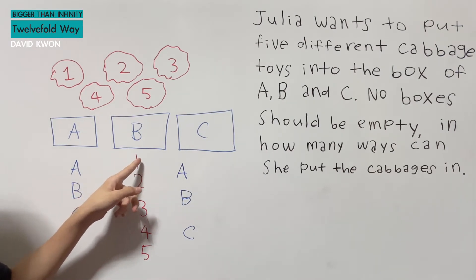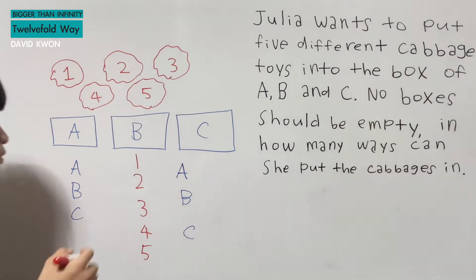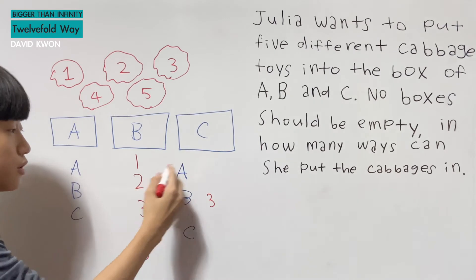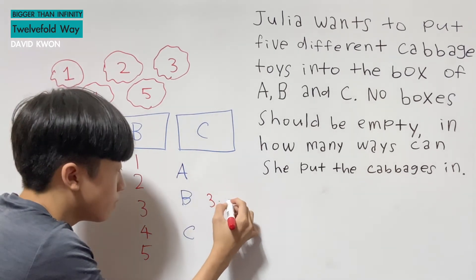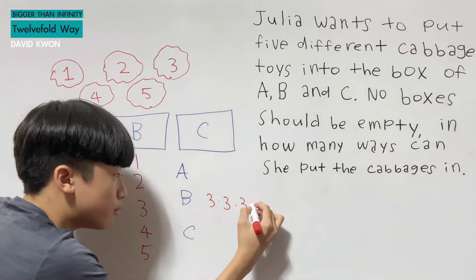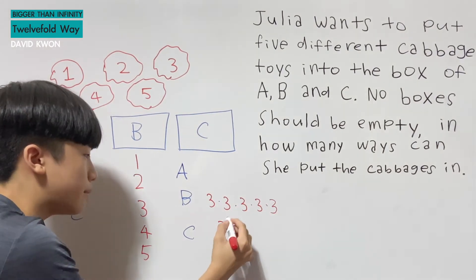So where can cabbage number one go to? We have A, B, C boxes. Number one can go in three ways. Number two can go in three ways. Number three can go in three ways. Number four can go in three ways. Five can go in three ways. Just basically three to the power of five.